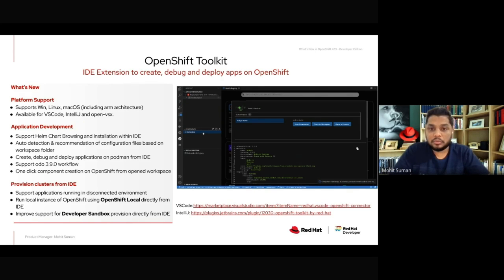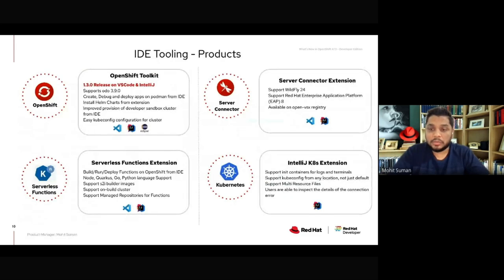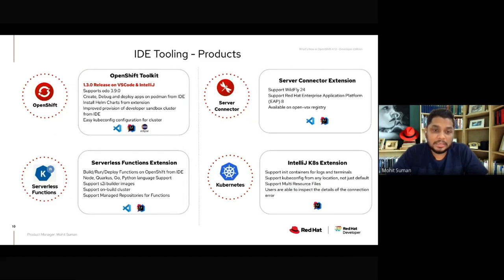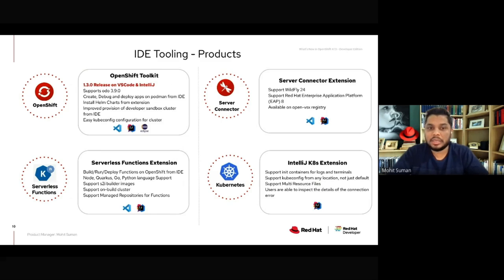Let's move on to the different set of IDE extensions. We have multiple IDE extensions catering to multiple products from Red Hat. One of them is OpenShift Toolkit — the latest version is 1.3.0. We have improved the workflow for provisioning a Developer Sandbox cluster, Helm chart support is now more intuitive to the developer experience, and Podman support is now built into the extension.